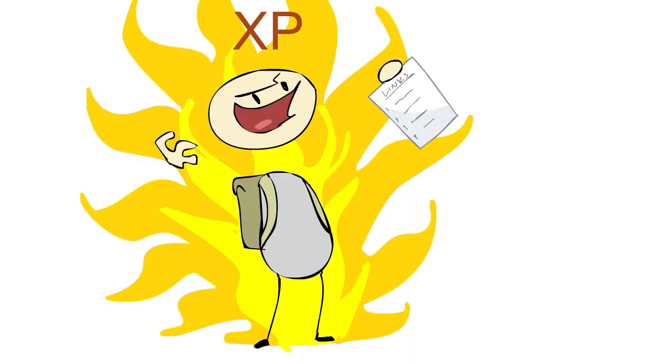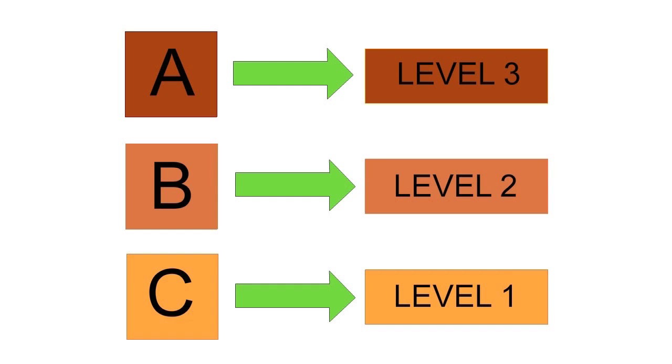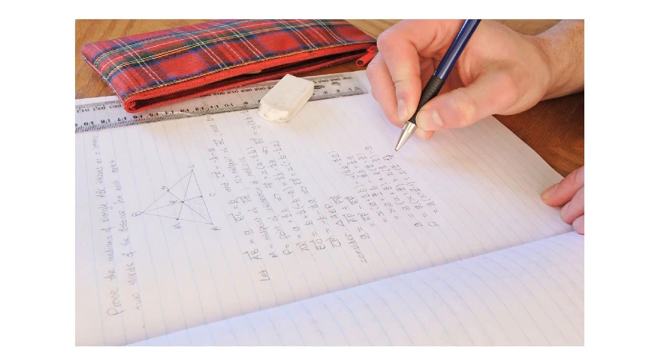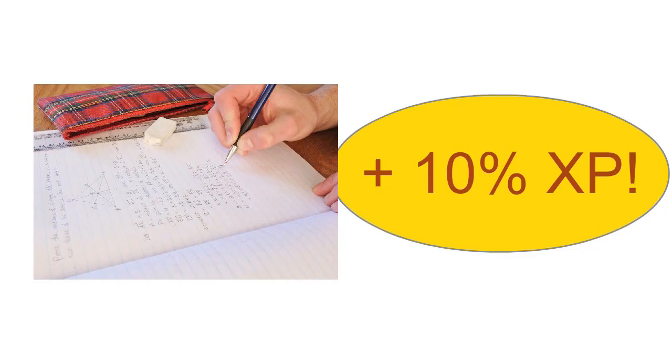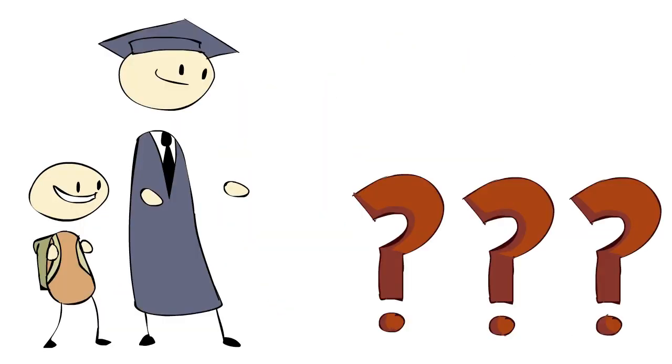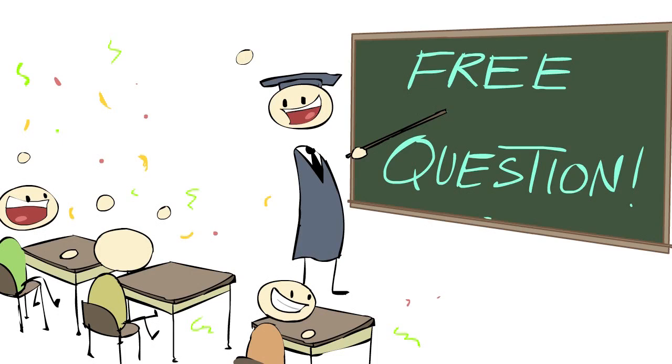Any student who does the exercise gets some experience, assuming you're using the grading system we talked about, but the winner is the student who can make the connection in the fewest number of links, and they get some additional bonus. Maybe their homework that day is worth an additional 10% experience, or they get a reward of 50 extra points, or they get to choose a question on the next quiz that everybody in the class will get full credit for automatically.